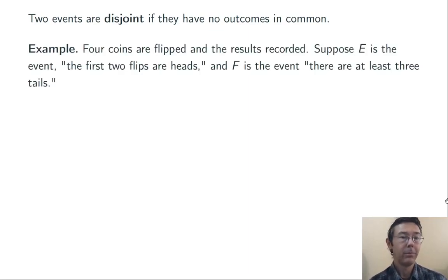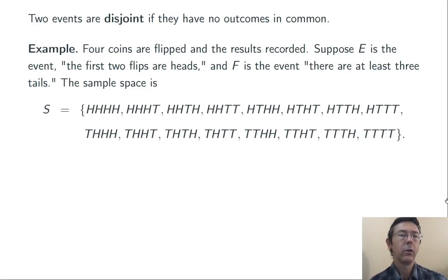For example, flip 4 coins and record the results. And let E be the event the first 2 flips are heads, and F, there are at least 3 tails. So the probability experiment has a sample space that consists of 16 possible outcomes. Things like heads, heads, heads, heads, and heads, heads, heads, tails.